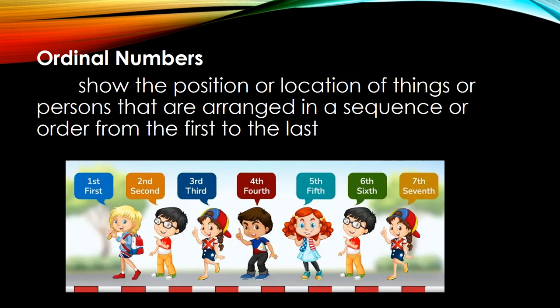Now let's talk about ordinal numbers. What is an ordinal number? For example, we have kids lined up here, from first to the seventh kid. Ordinal numbers show the position or location of things or persons arranged in a sequence or order from the first to the last.